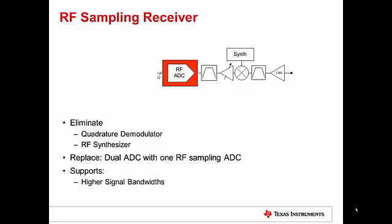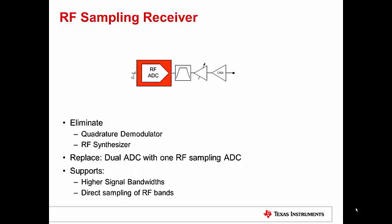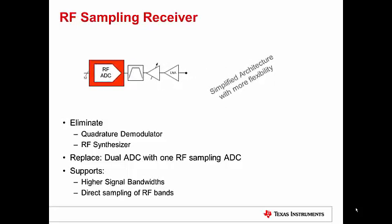This architecture can now support higher signal bandwidths, and we can even directly sample the RF band if that's the operation that we're in. With this architecture, we have simplified the lineup and we've provided ourselves more flexibility.